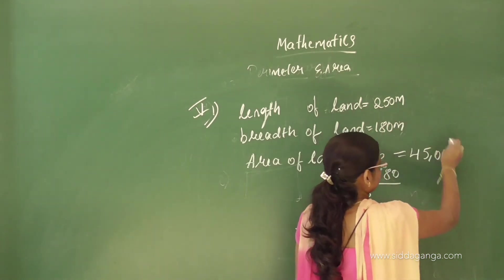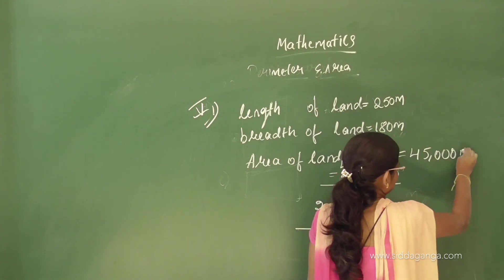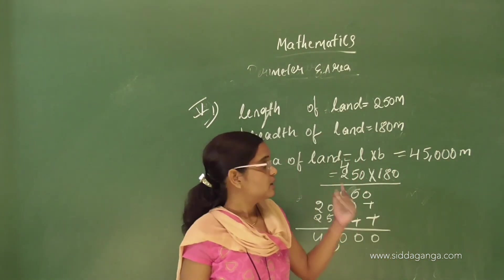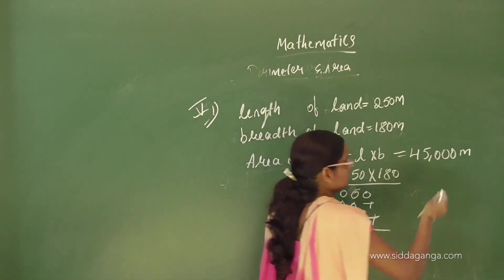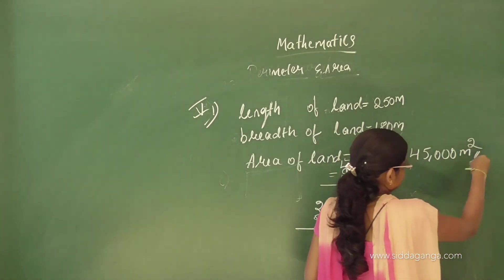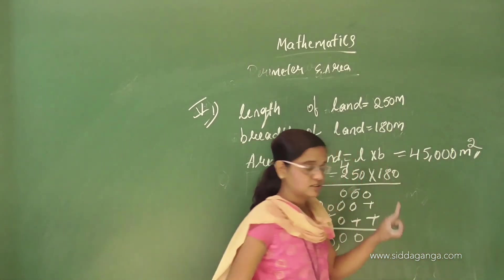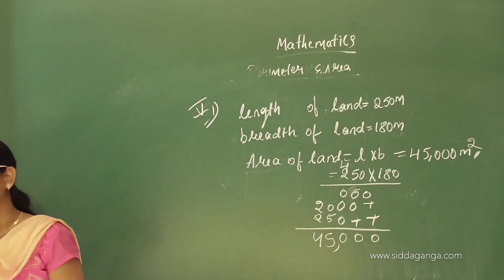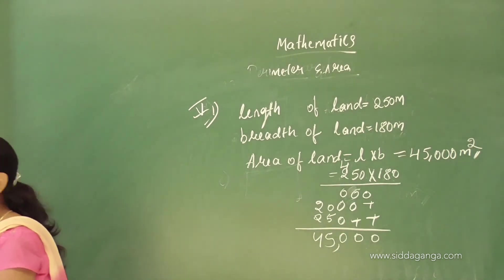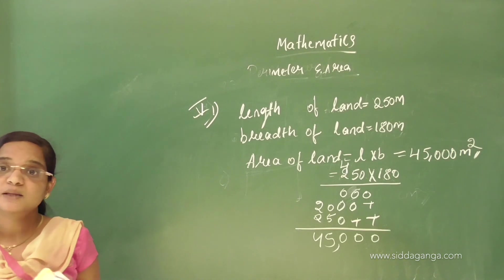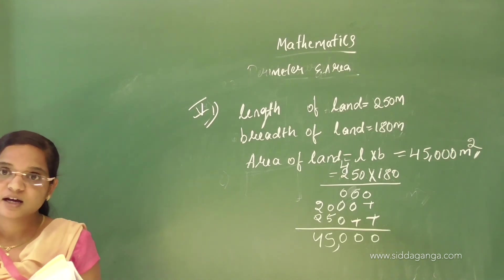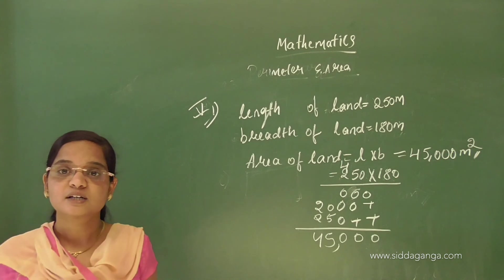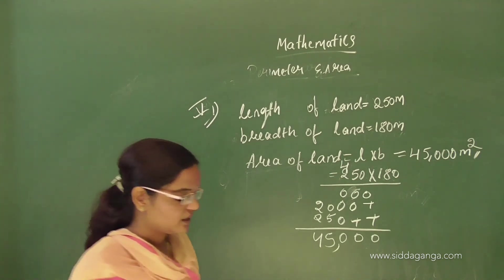If you have a unit, it becomes that unit squared. If the unit is centimetre it becomes centimetre square, if kilometre then kilometre square, if metre then metre square. The two written above indicates square — that is how it indicates the area.